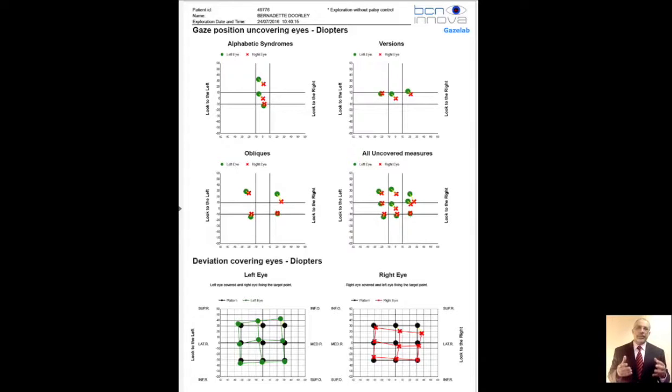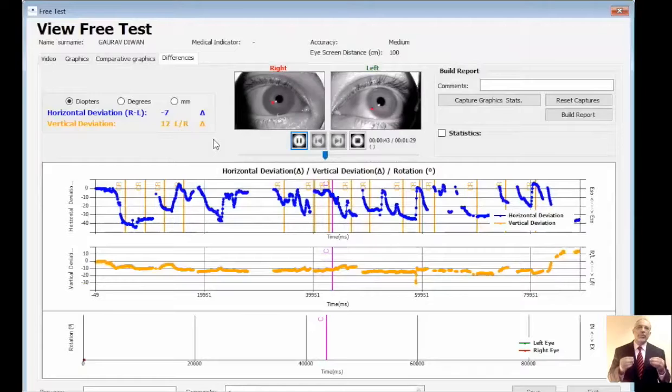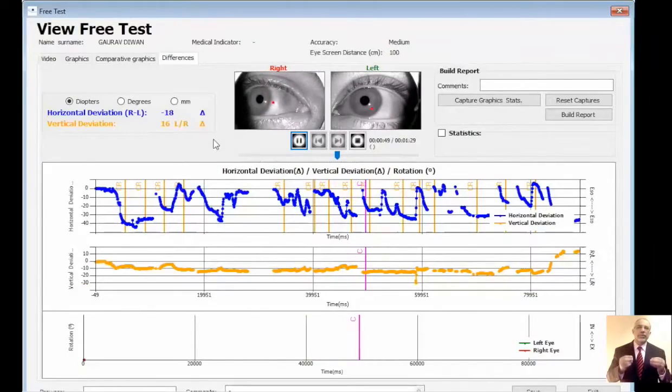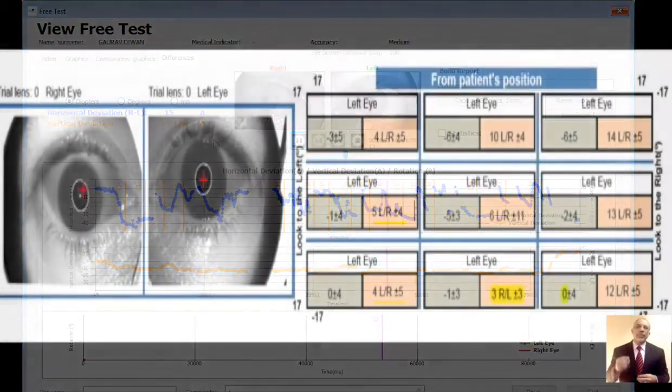If you are convinced by all of this, if you still need more data, you have it. We have a very nice recorded video for your test, where you can stop at any point and you will see horizontal, vertical, and cyclotorsion deviation at any point in space at any time.